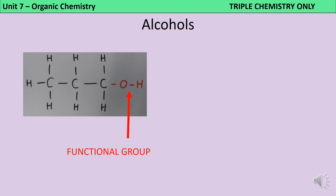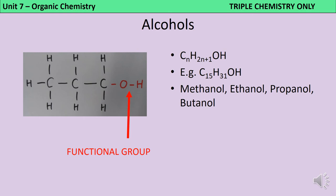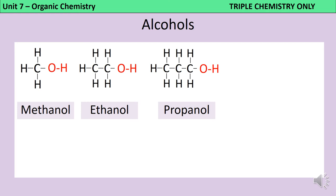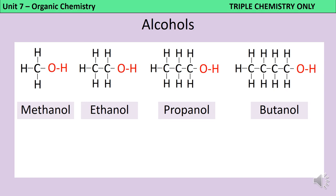The next homologous series we need to look at are the alcohols. The chemistry of this group is defined by their functional group, which is an oxygen atom covalently bonded to a hydrogen atom. The general formula for the alcohols is CnH2n+1OH — for instance, with 15 carbon atoms the formula would be C15H31OH. The first four alcohols are named similarly to alkanes: methanol, ethanol, propanol and butanol. To draw each of these, we start in the same way as with an alkane but replace one hydrogen with an oxygen bonded to a hydrogen. The functional group appears only once in each molecule, and the name is based on the longest carbon-carbon chain.